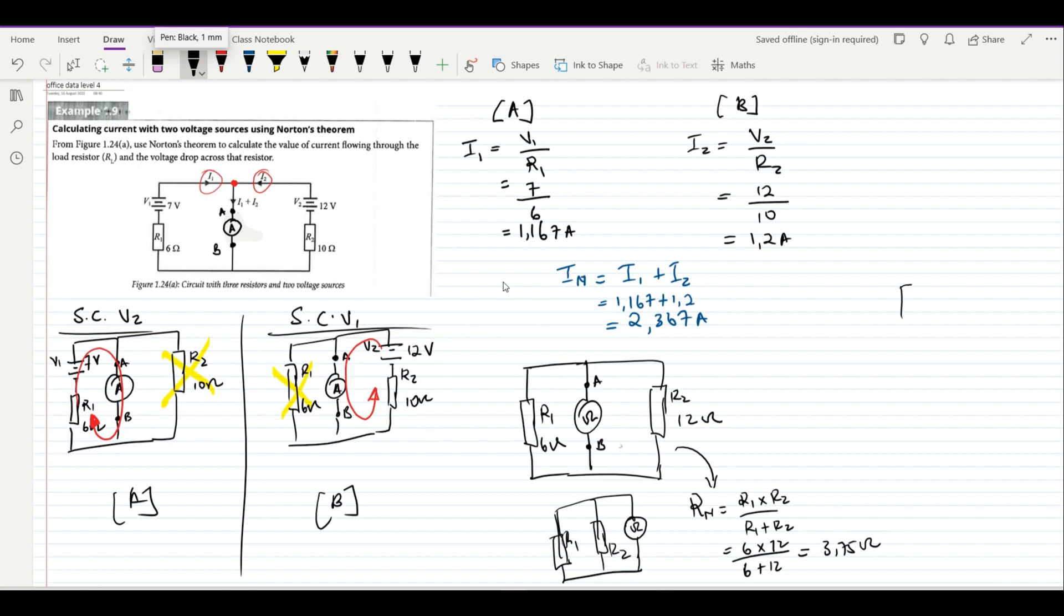And then now we need to draw our Norton equivalent circuit diagram. Remember, the Norton equivalent circuit diagram is different from your Thevenin equivalent circuit diagram. Here we're only going to be using your Norton current as well as your Norton resistance, all connected now to your load resistor. In this case, our load resistor was given as 20 ohms.